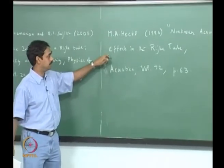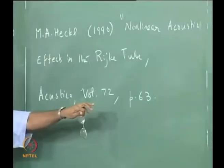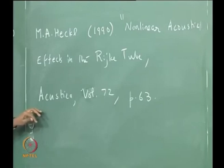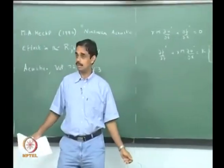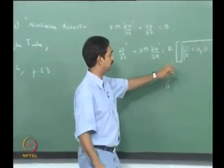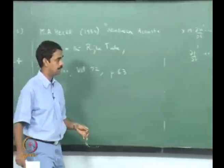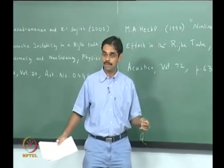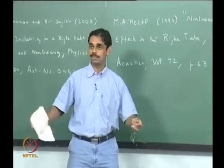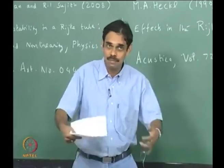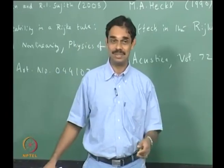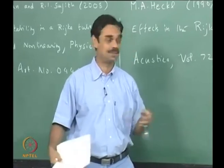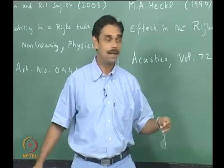I have bypassed that using a correlation provided by my friend M. A. Heckl. The reference is 'Non-linear acoustic effects in the Rijke tube,' Acustica, volume 72, page 63. She is a professor in Kiel. This correlation is a modified version of King's law from hot-wire anemometry. The modification is a factor of 3 — Professor Heckl found in her experiments that this factor makes results match correctly. It is in some sense put in ad hoc; someone else might use 1.5 or 1.